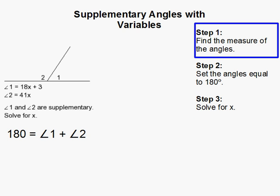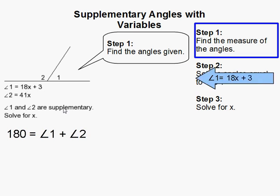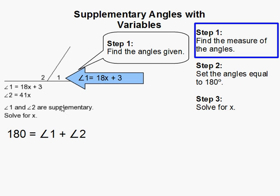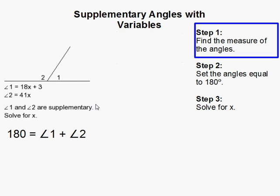Alright, so the first thing we have to do is we have to find the measures of the angles which are generally given, like in this problem. So we have angle 1 which is equal to 18x plus 3, and you have angle 2 which is given as 41x. Once we know that these two things here, we can go ahead and set up our problem.